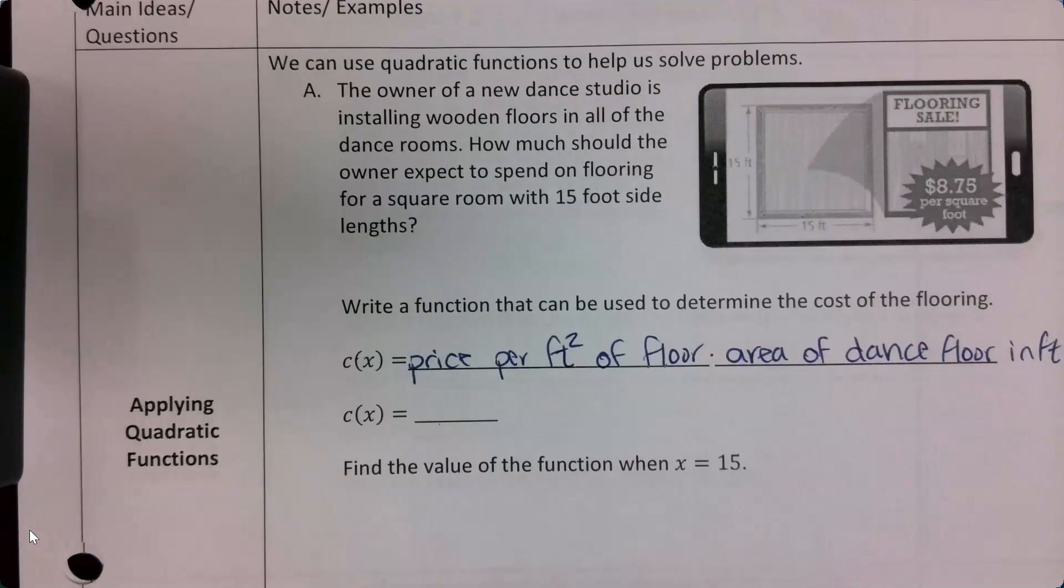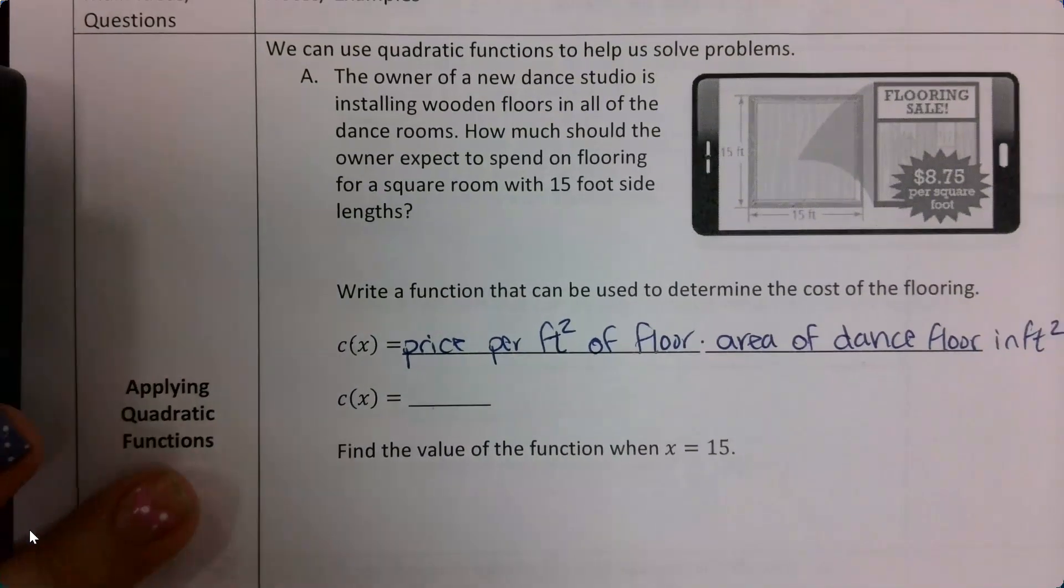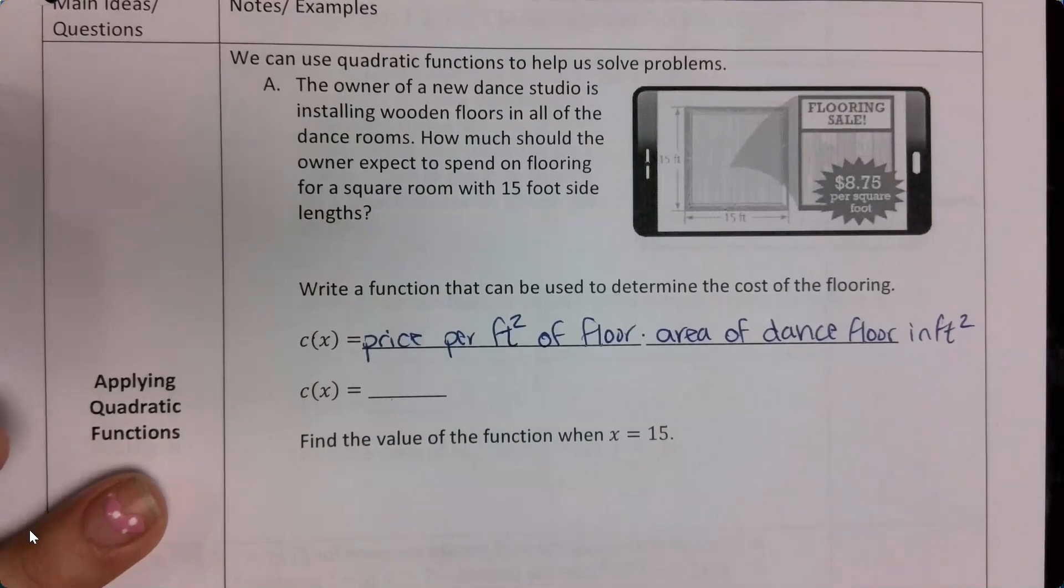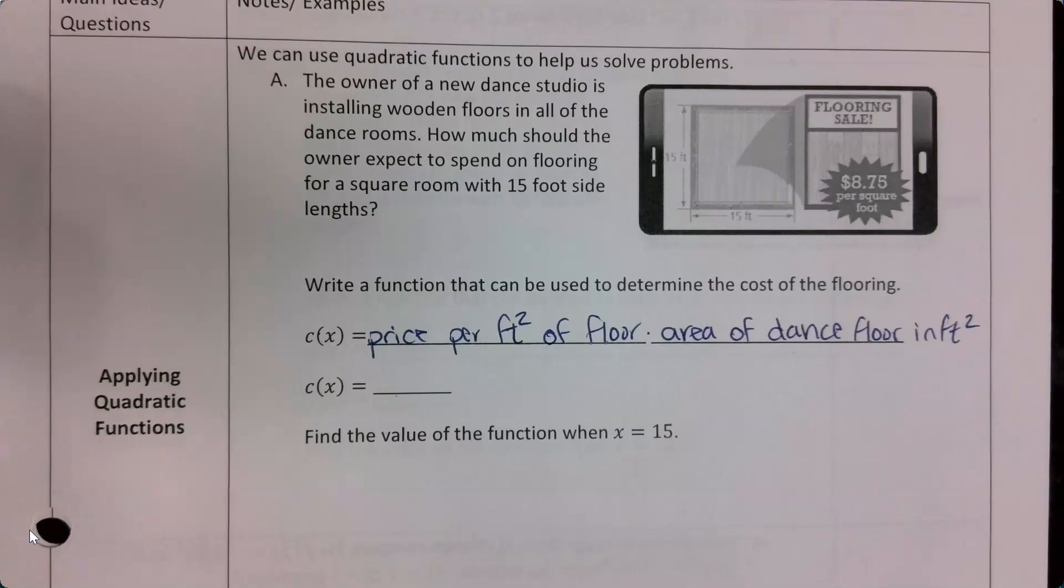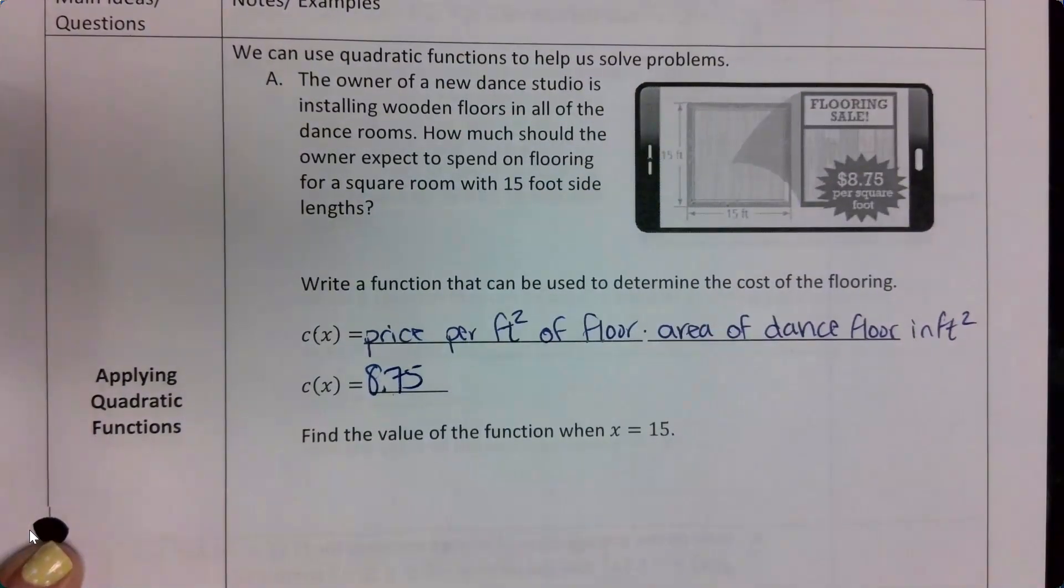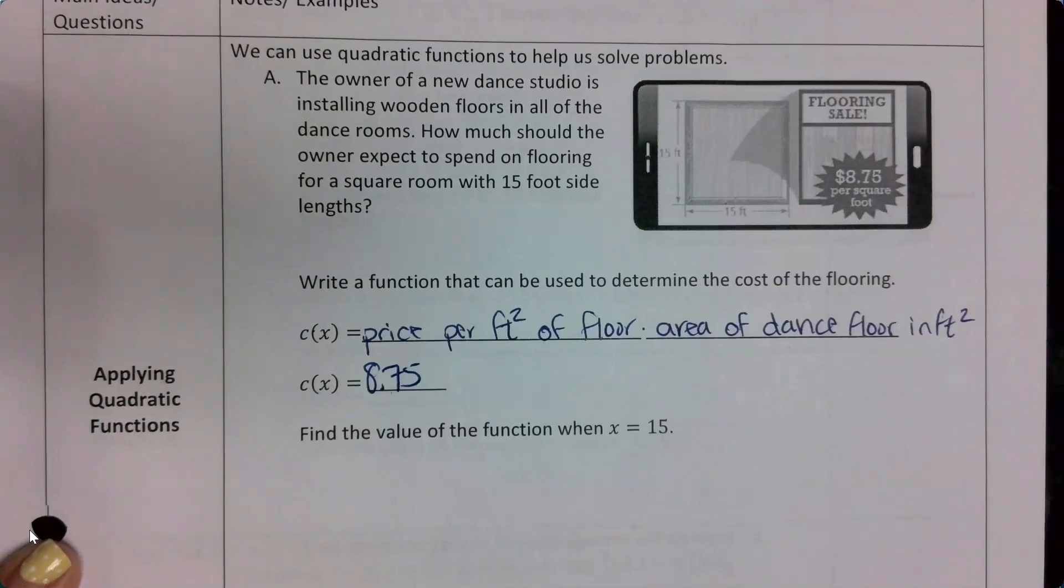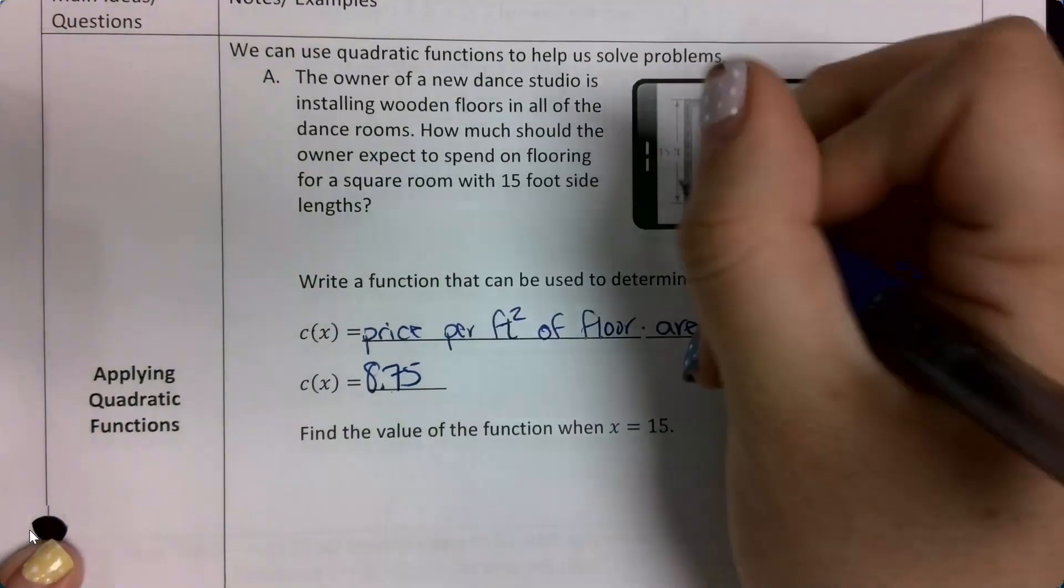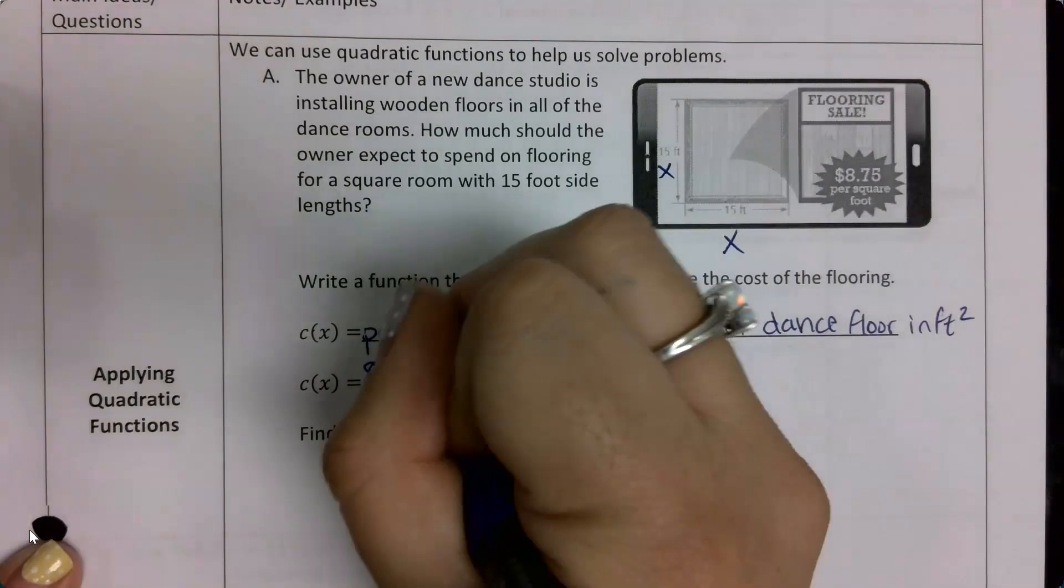Okay, so wait, this is the formula. What was the price per square foot? This one's in the picture. Mm-hmm, 8.75. And the area of the dance floor, if I'm writing a function I don't want to put my number in yet. So I have two side lengths, so it's going to be x squared.